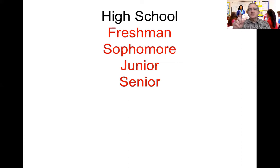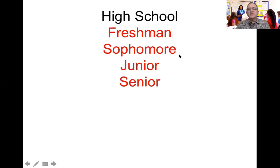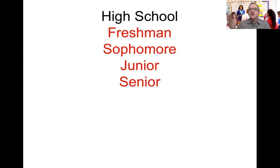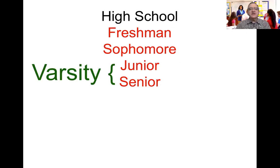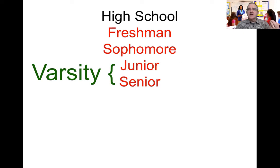So freshman is first year, sophomore is second year, junior is third year, and senior is fourth year. High schools in America have four years; Japanese have three — but altogether we both have 12 years total before high school graduation. The juniors and seniors are called varsity — they are the upper level, and varsity football, varsity basketball, and varsity baseball are for them. Lower level students are not allowed to play on those teams.